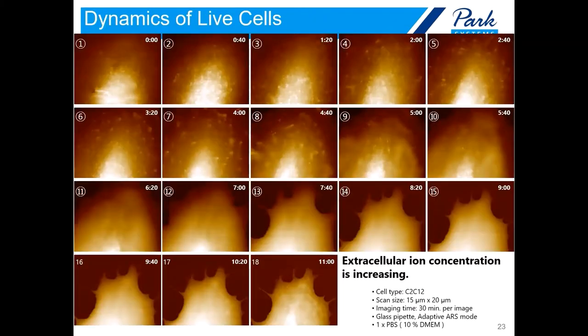This slide presents sequential SICM images of C2C12 live cells. As the ion concentration in the buffer increases, you can see the number of small microvilli structures on the cell membrane is decreasing. At picture number 11, no more microvilli are visible on the cell membrane.